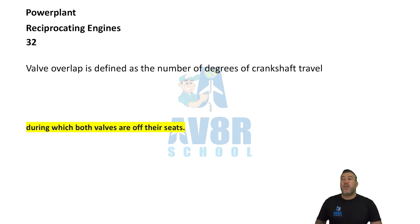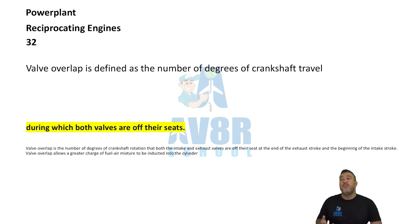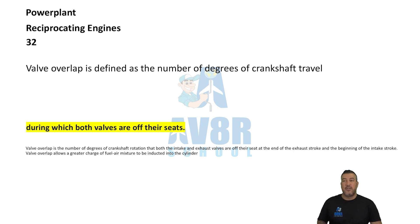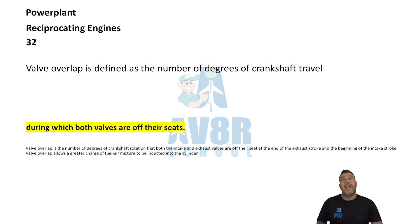Number 32. Valve overlap is defined as the number of degrees of crankshaft travel during which both valves are off their seats.